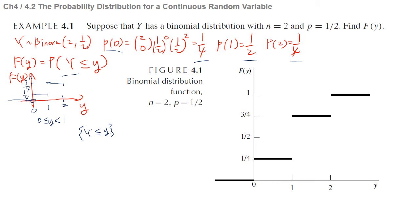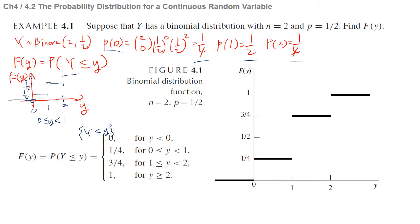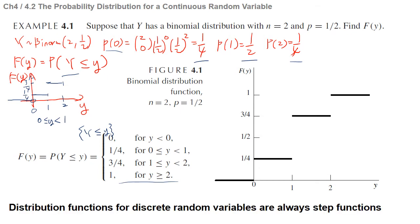So F(y) is a step function defined as P(Y ≤ y). As you may notice, distribution functions for discrete random variables are always step functions. They always have probability mass on specific points — there is a jump at each point that has probability mass, and the function stays the same between those points.